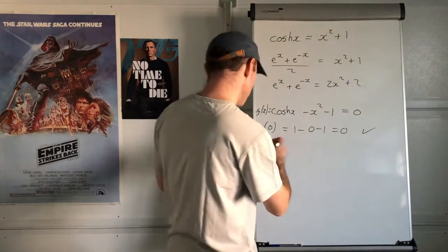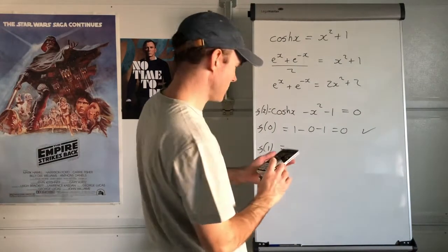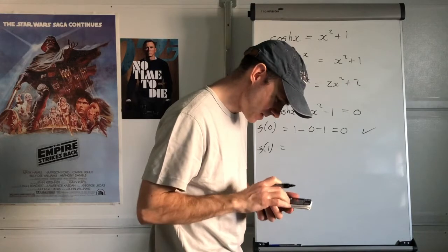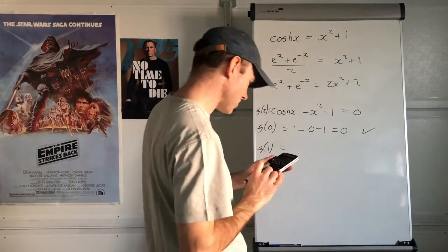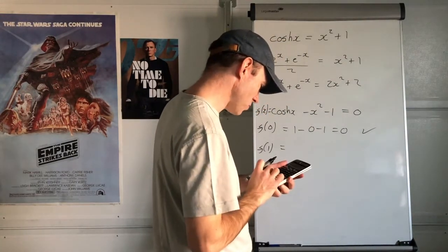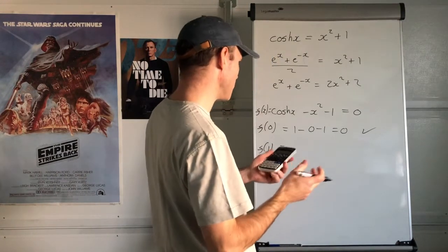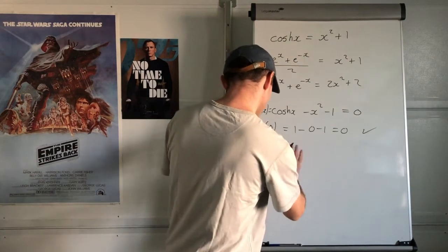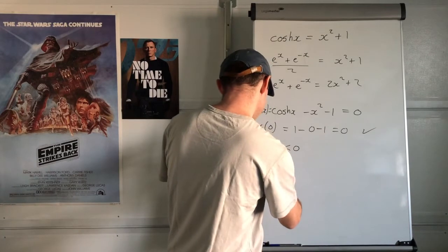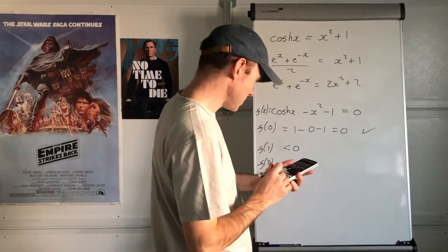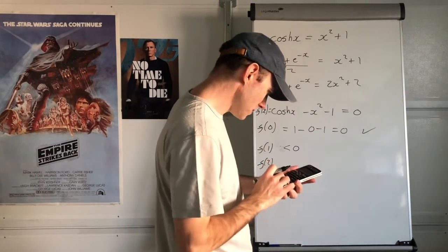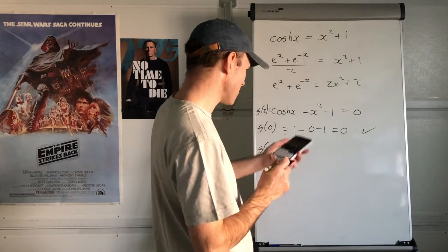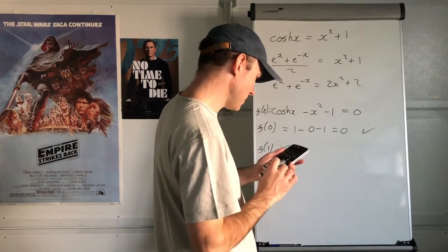So I'm going to try f(1): cosh(1) equals 1.54, subtract 1, subtract 1 — that's negative, so less than 0. Then f(2): cosh(2) subtract 4 subtract 1, so subtract 5 — still negative.